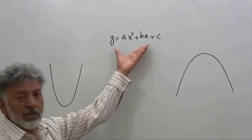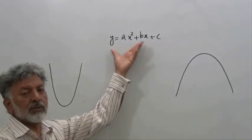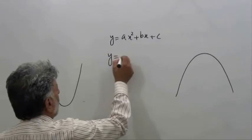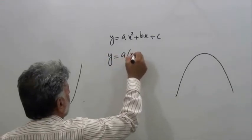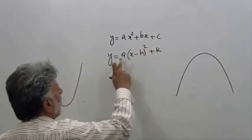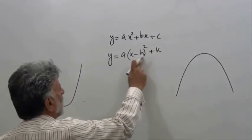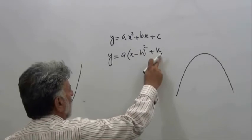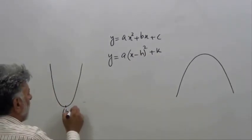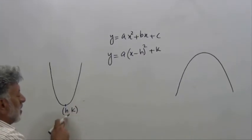So we change the format of this given expression to y equals a times the quantity x minus h squared plus k. In case the value turns out to be minimum, the coordinates of the value are (h, k), and if it is maximum, again the coordinates are (h, k).